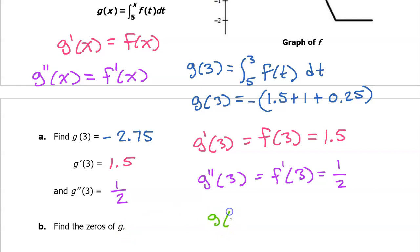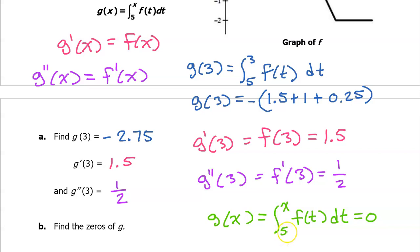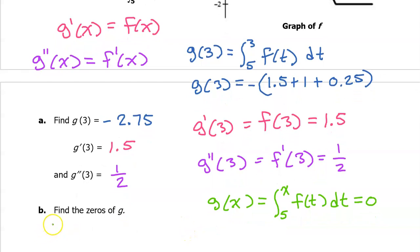For what values of x will the integral from 5 to x of f at t dt equal 0? Well, one is obvious: if x is 5, then we have the integral from 5 to 5. There is no area between 5 and itself, so that integral will automatically equal 0. So 5 is one of the zeros. But what else?